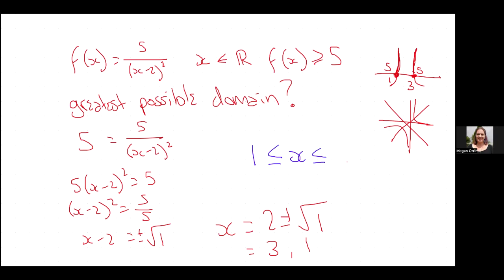One and three. So here is our one. Here is our three. If we want our function to be greater than five, we just replace y with five and then solve it like a normal equation. Never forgetting to take both positive and negative. This is our greatest possible domain for this restriction. Are you with me? With you. Yes.